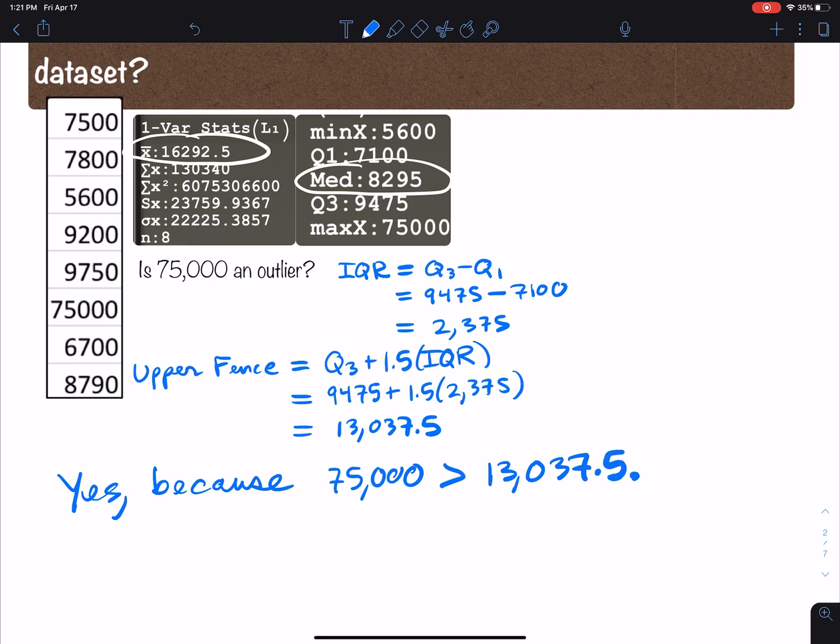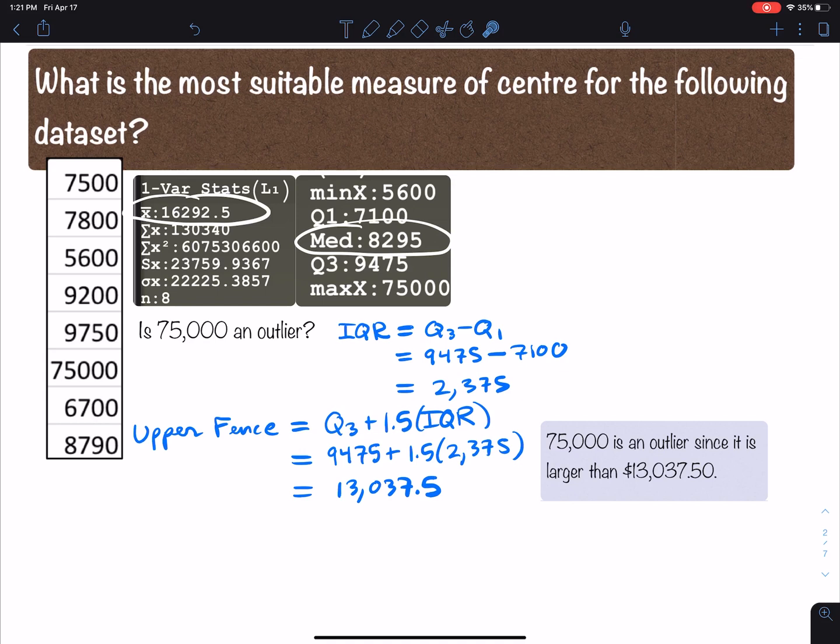So yes, 75,000 is an outlier. So one thing to point out here is that the mean is affected by the outlier. It got bigger because there's this big outlier. So the mean uses every single one of these values in its calculation, therefore the mean gets affected by the outlier. However, when you find the median, you do not use all of these values. You only find the middle value. So we say that the median is resistant, it's unaffected by outliers.